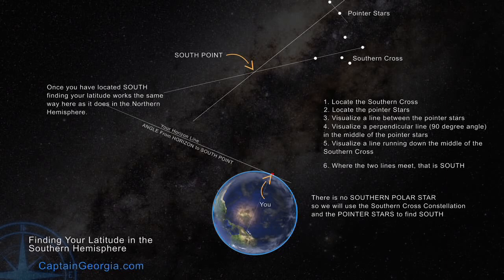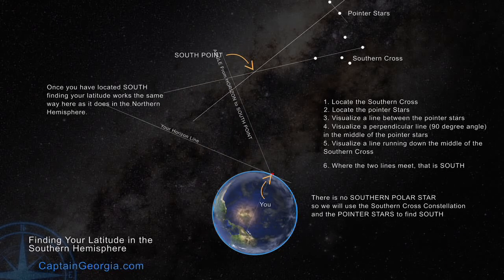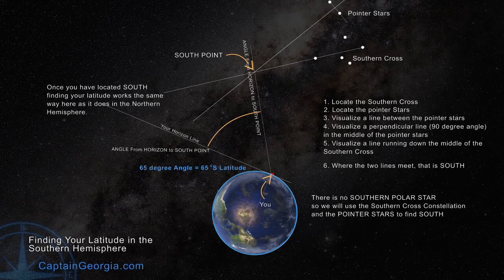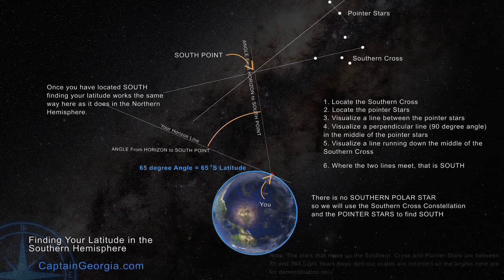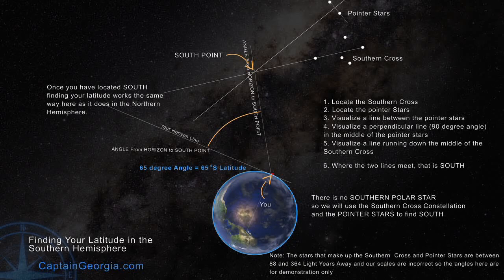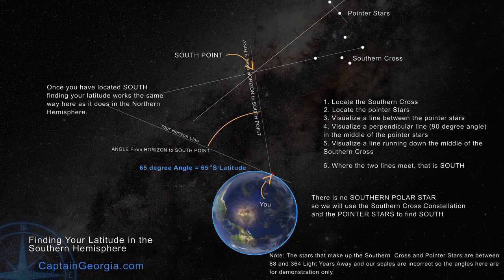Our new horizon — and we look at our south point again. Now we're at 65 degrees, so we're at 65 degrees south latitude. This works exactly the same as the Northern Hemisphere once you have your south point. So even though the scale is a little bit off because of the distance of the stars, the process works for you. You just have to find the pointer stars, the Southern Cross, draw those two imaginary lines, find your south point, look at your horizon, and measure the angle in degrees to the south point.